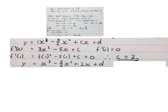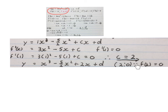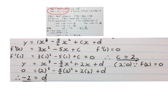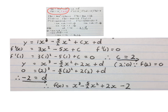The equation now looks like this with c = 2. Since f(2) = 0, we have the coordinate (2, 0) on the function. Substituting y = 0 and x = 2 into the equation and simplifying gives d = -2. The final equation is now complete.